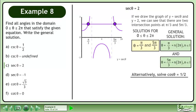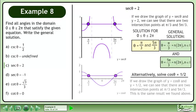Alternatively, solve cos θ equals ½. If we draw the graph of y equals cos θ and y equals ½, we can see that there are two intersection points at π over 3 and 5π over 3. This is the same result we found above.